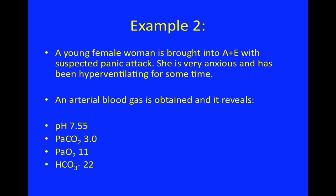Example two: a young woman is brought into A&E with a suspected panic attack. She's very anxious and has been hyperventilating. Again, you can suspect what may be occurring on the ABG from the clinical picture. However, you don't know why she's behaving that way — she may have an underlying reason that looks like a panic attack but could be something else.